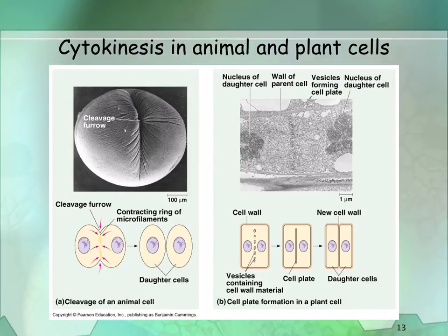Here is a comparison of cytokinesis between plant and animal cells. On the left, cytokinesis in an animal cell shows the cleavage furrow forming. On the right, cytokinesis in a plant cell shows vesicles containing cell wall material lining up along the equator, forming the cell plate which divides the cell into two daughter cells.